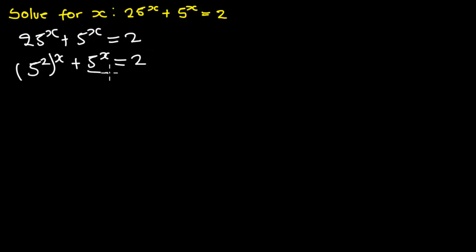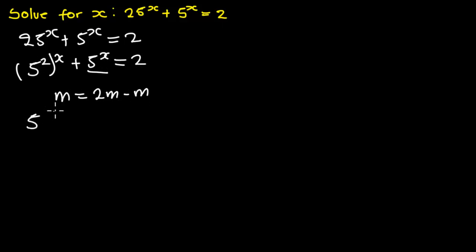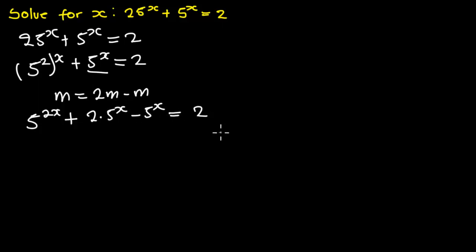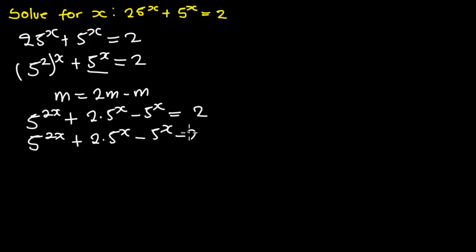Now let us manipulate 5 exponent x. For instance, we can write m as 2m minus m — we are going to use this idea to manipulate 5 exponent x. So from here we are going to have 5 exponent 2x, plus we are going to rewrite 5 exponent x as 2 of 5 exponent x minus 5 exponent x, is equal to 2. Then we move 2 to the left-hand side to get 5 exponent 2x plus 2 of 5 exponent x minus 5 exponent x minus 2 is equal to 0.